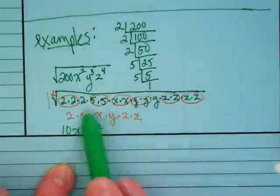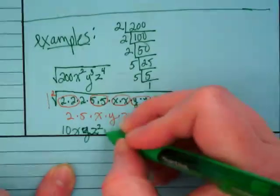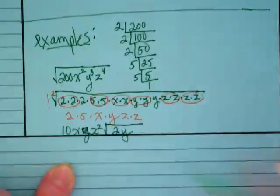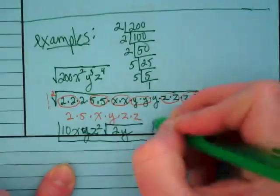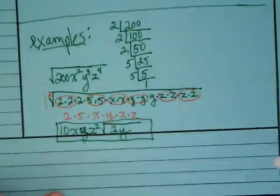What's left inside of the radicand? Two and y. So the symbol is still there. And this is my result. I factored out everything I can.